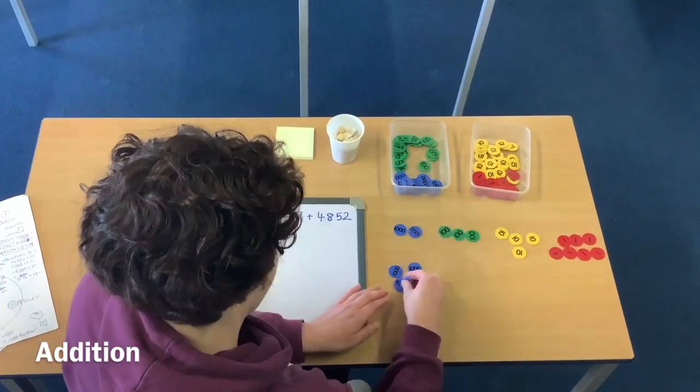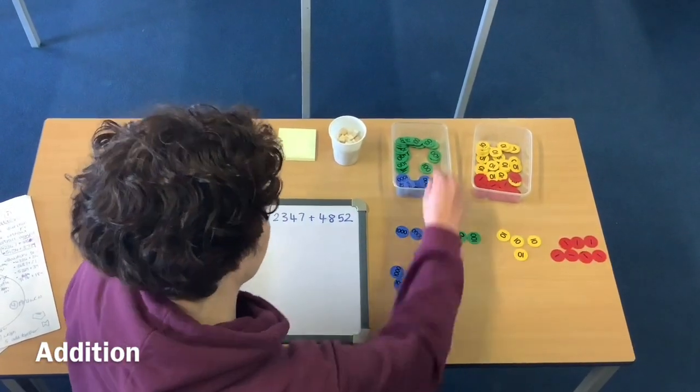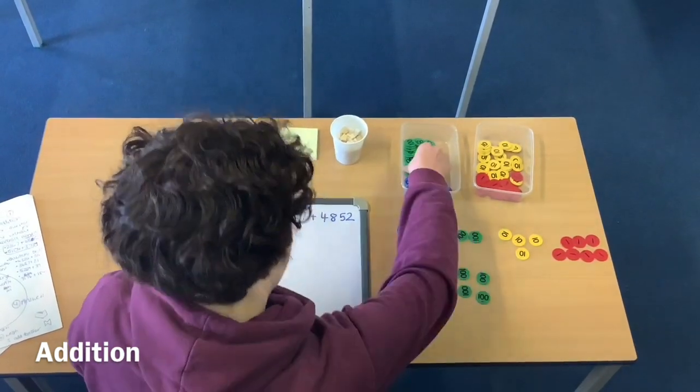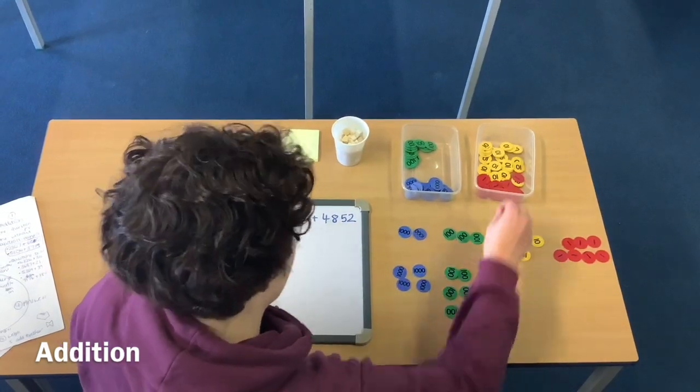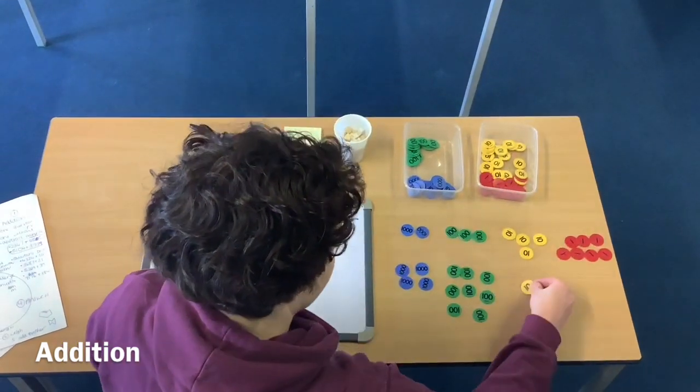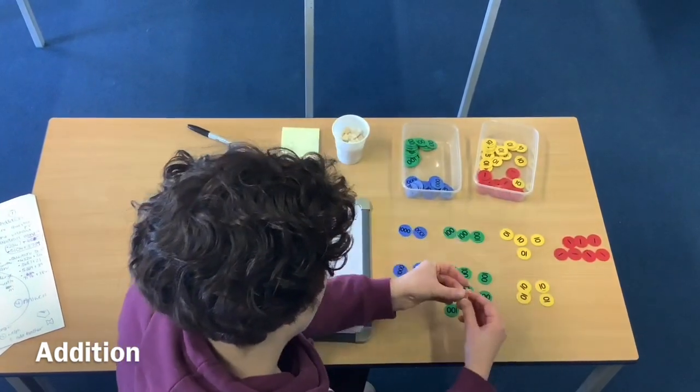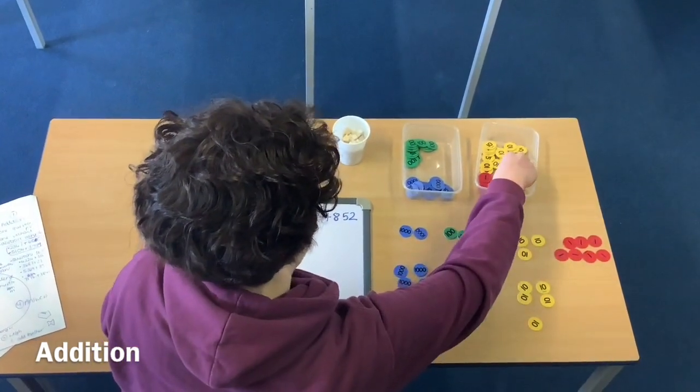So to make sure I'm lining them up properly, I've got my 4 thousands, 8 hundreds, and 5 tens. So I've got 5 tens and then 2 ones.